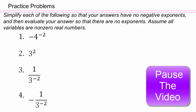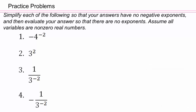Do the practice problems now — we will share the answers in just a little bit. Pause and do them on your own. Assuming you've come back, let's see if you got that. The negative stays because it's on the outside. The negative 2 power makes the 4 go in the denominator and gives a positive 2 power. 3 squared is just going to be 9.